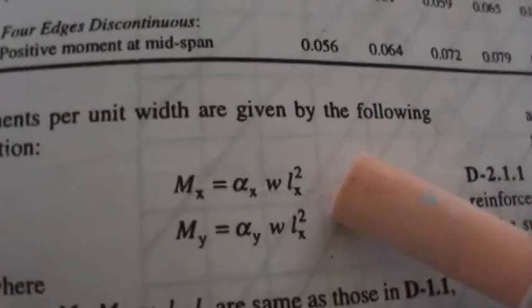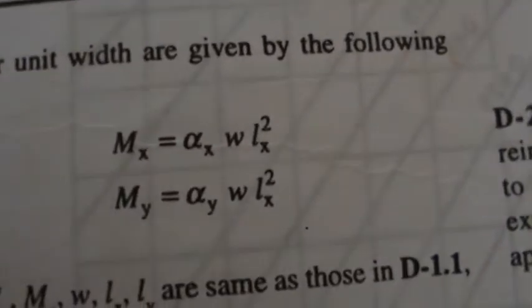Equations are now here. You can see MX is equal to alpha X W LX square and MY is equal to alpha Y W LX square. Instead of W, I have written WU because we have to take the ultimate load. Am I right sir now? Okay. So equations are now here.